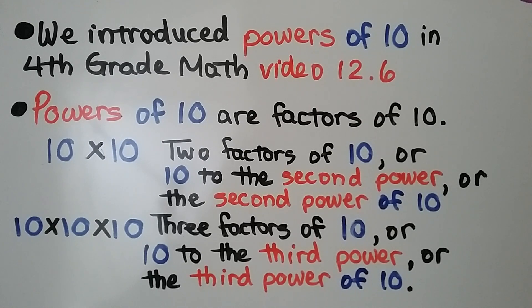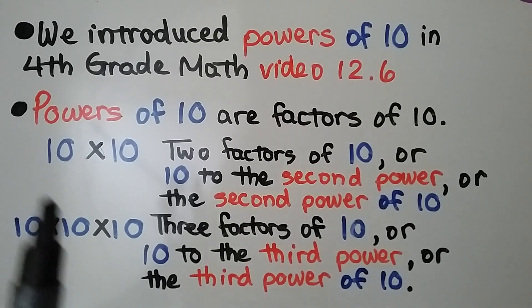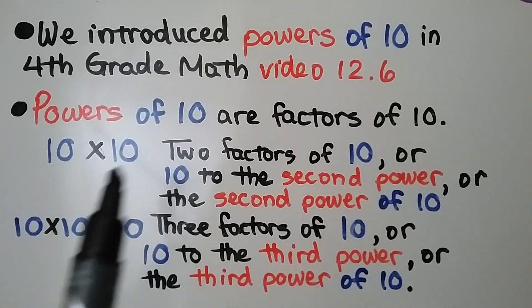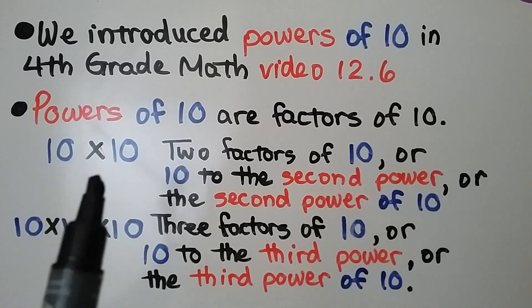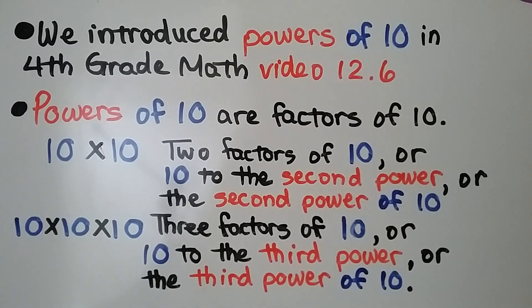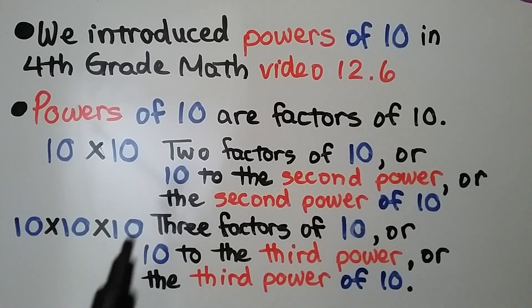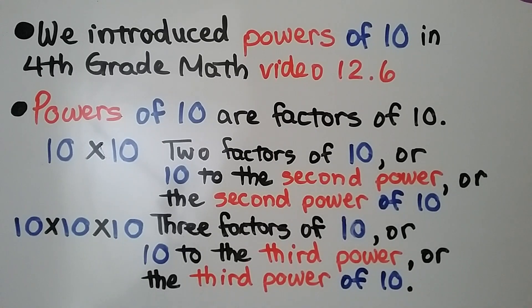Powers of 10 are factors of 10. So 10 times 10 — we have two factors of 10, or 10 to the second power, or the second power of 10. Here we have three factors of 10, so this would be 10 to the third power, or the third power of 10.